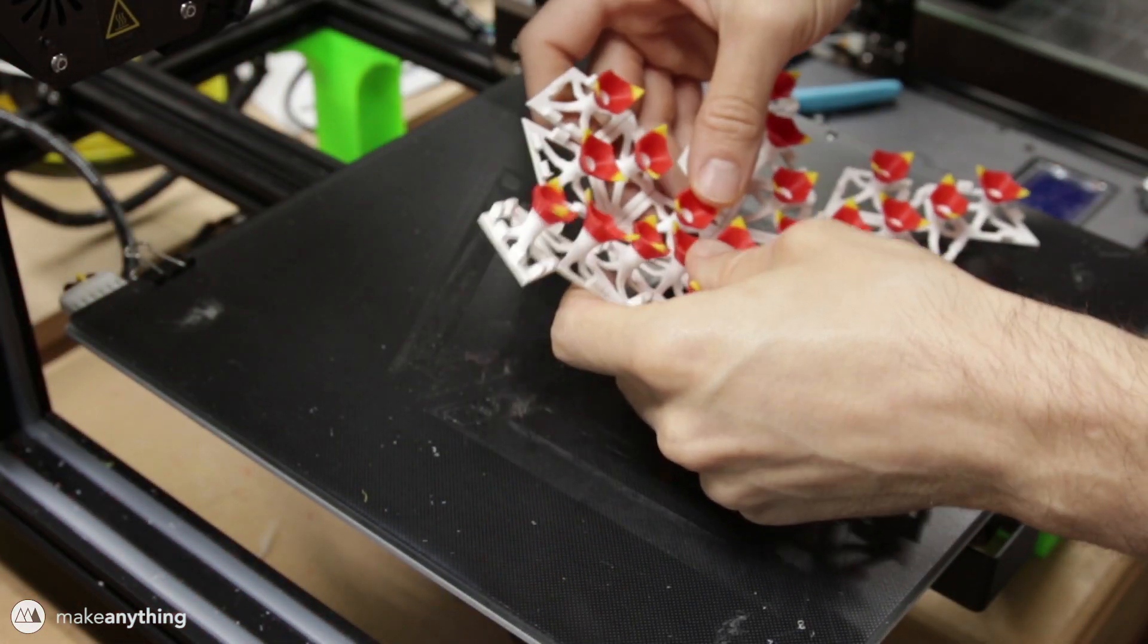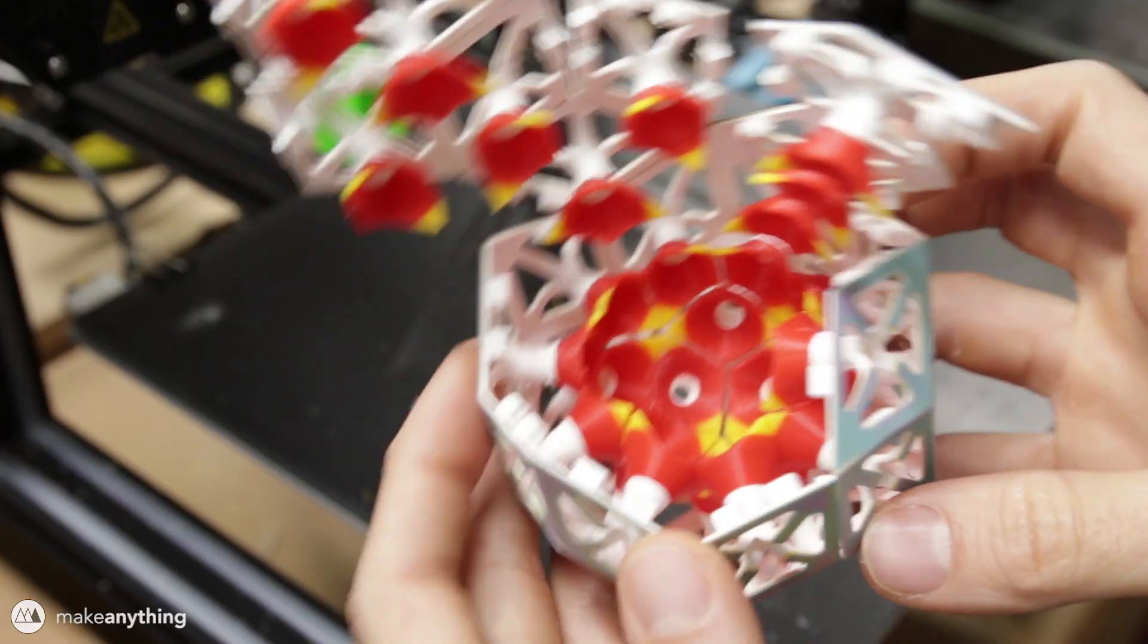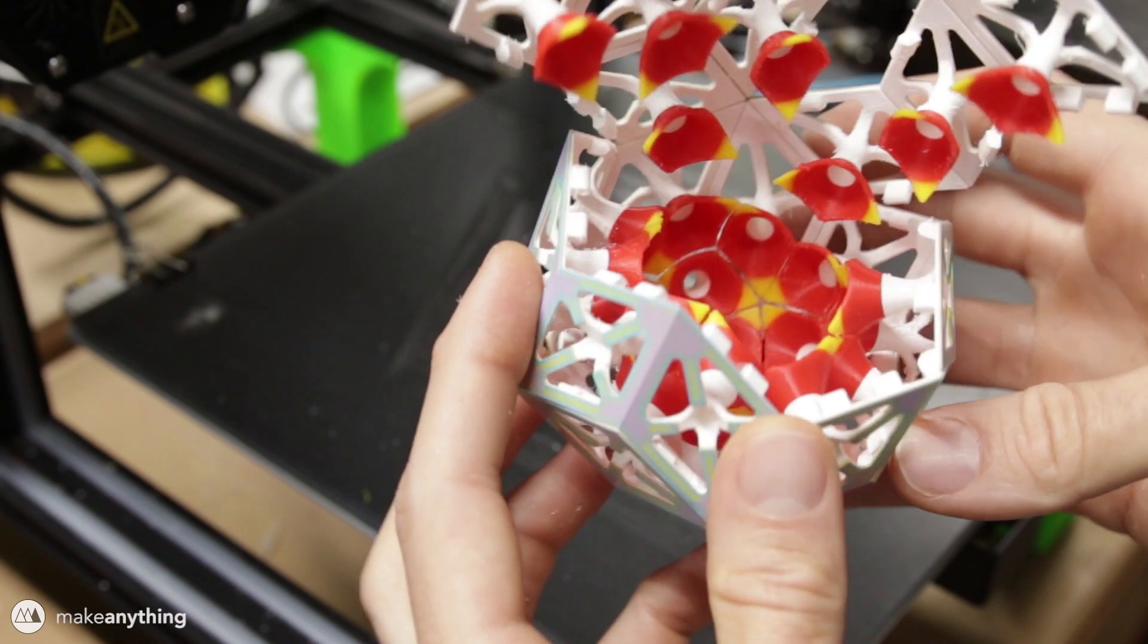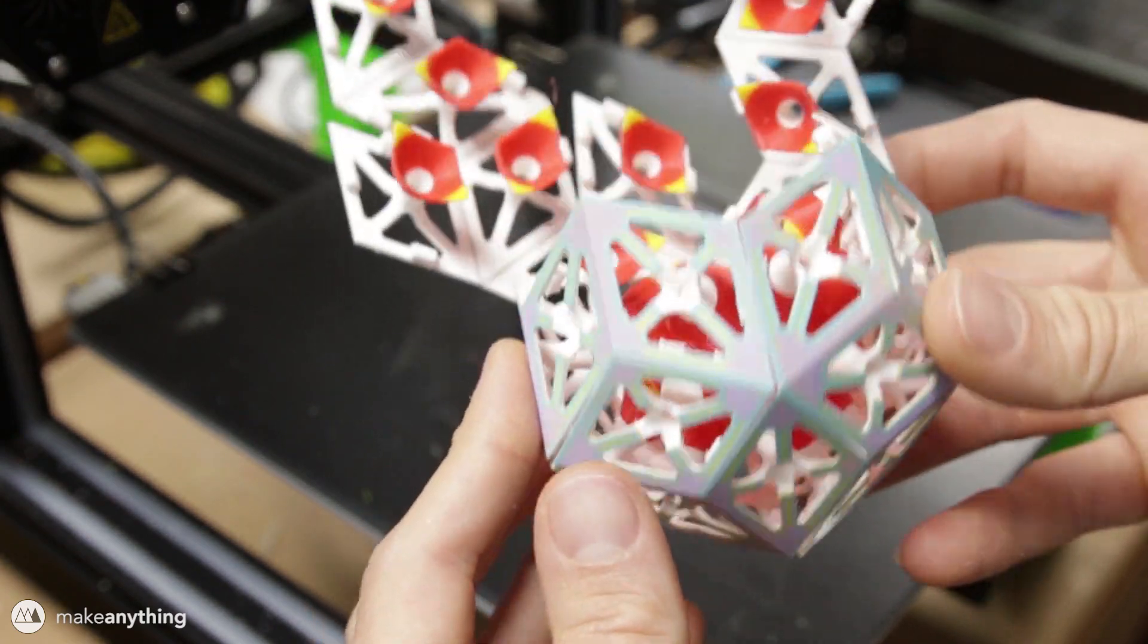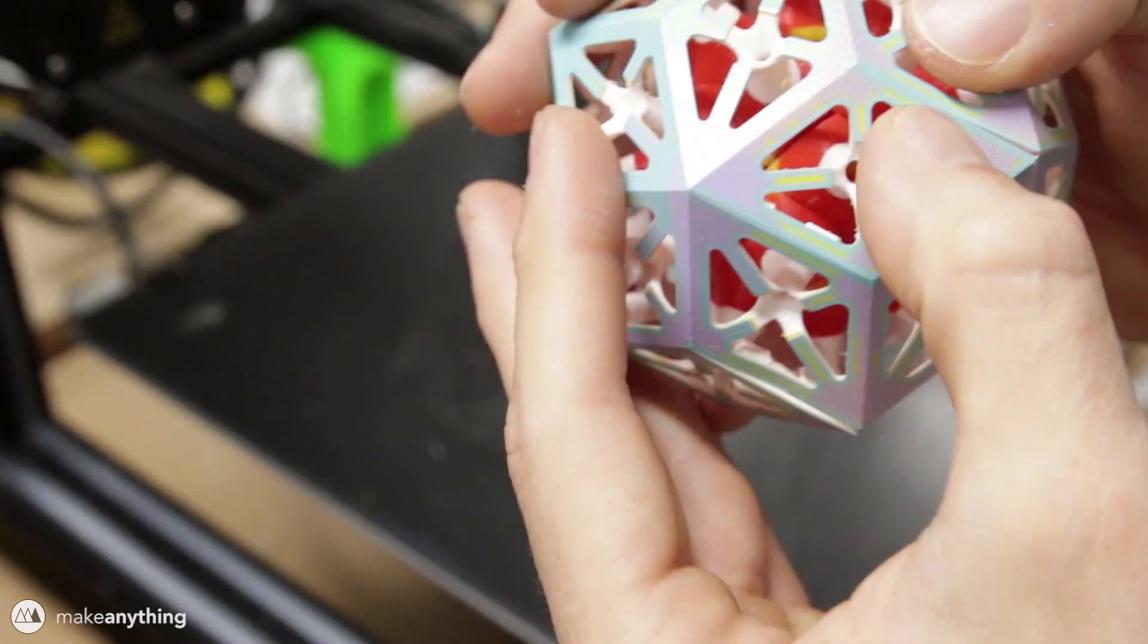Then there's this crazy one where I basically threw together all these different techniques. This is another triacontahedron that I modified to have this kind of spore-like sphere on the inside. It's a really wild looking one.